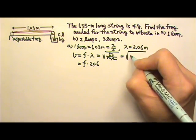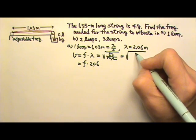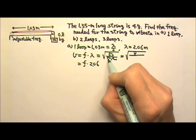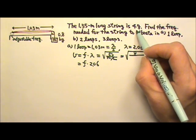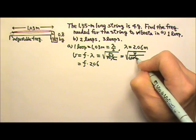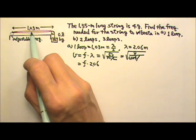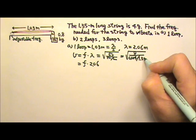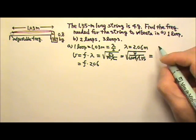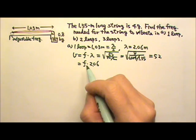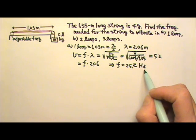The tension in the string is produced by the hanging weight of 0.8 kilograms, which means the tension is 8 newtons. The mass per unit length uses the full string mass of 0.004 kilograms over the full length of 1.35 meters — not 1.03. Calculating the wave speed gives 52 meters per second, so 52 equals frequency times 2.06, giving a frequency of 25.2 hertz.